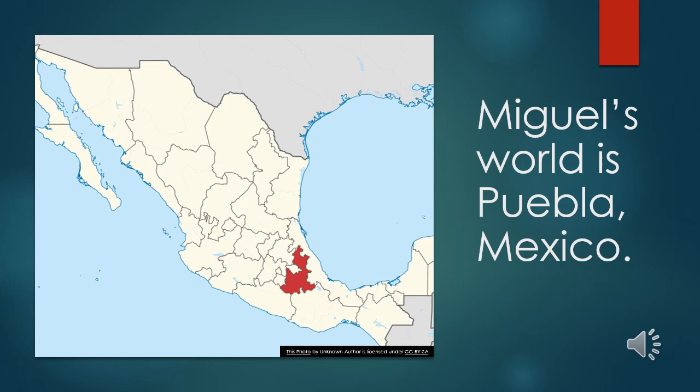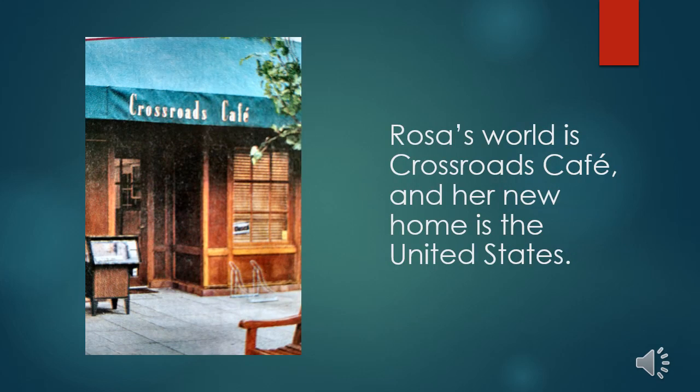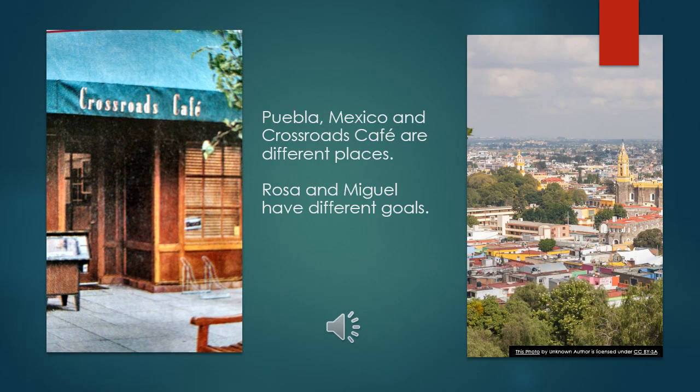Rosa's boyfriend Miguel Sanchez lives and works in Mexico. He is an architect. Rosa lives and works in the United States. She works at the Crossroads Cafe. The United States is her new home. She's taking business classes. She has plans to open a restaurant someday. Puebla, Mexico and Crossroads Cafe are different places — they are in different countries. Rosa and Miguel have different goals. They have grown apart. They are worlds apart.